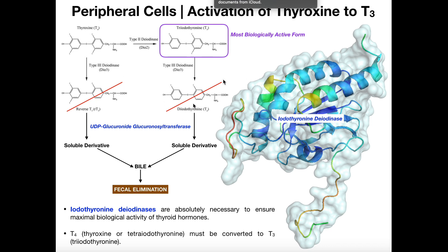These inactive metabolites of the thyroid hormones are then glucuronidated through the enzyme UDP-glucuronosyltransferase, which transfers a glucuronide residue onto them, rendering them soluble. They are then transported to the bile and eliminated in the feces. That is the mode of thyroid hormone elimination — inactivated through deiodinase reactions, conjugated to glucuronides, and put in bile for fecal elimination.